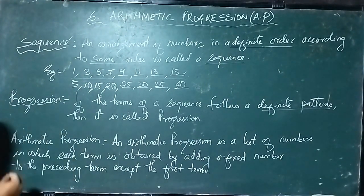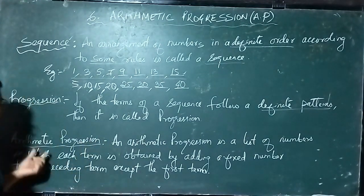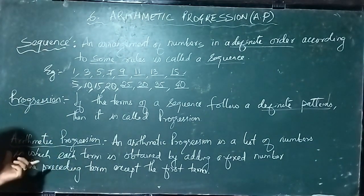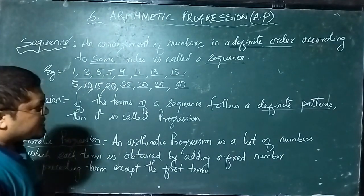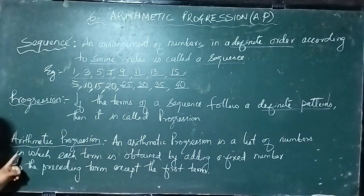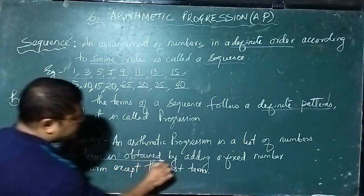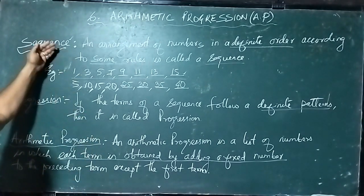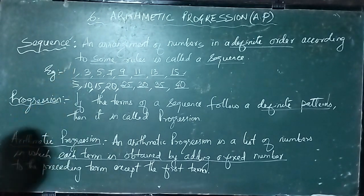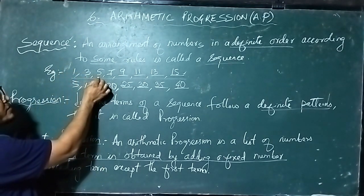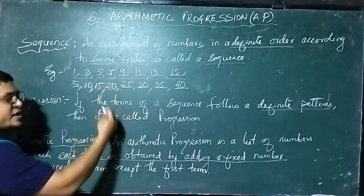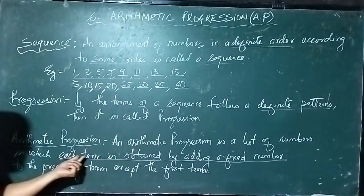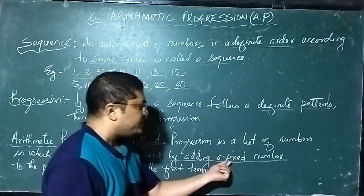Then here we have arithmetic progression. Arithmetic is a branch of mathematics where we mainly deal with numerical operations. What is arithmetic progression? An arithmetic progression is a list of numbers in which each term is obtained by adding a fixed number. Each term — you already know about terms from the earlier examples. The first one is the first term, then second term, third term, fourth term, fifth term, sixth term, and so on.